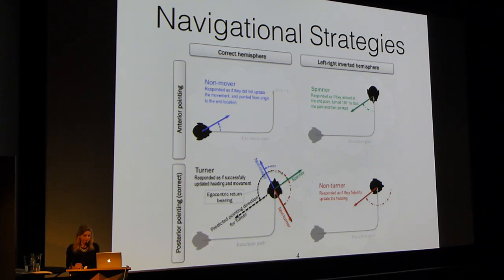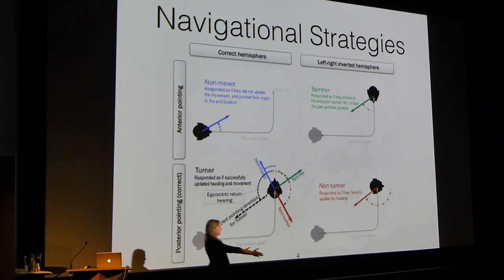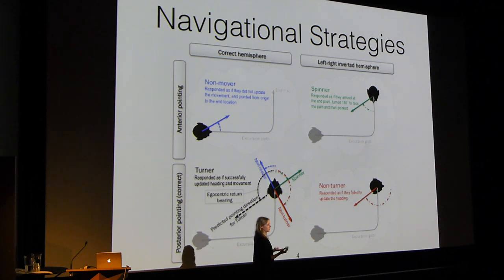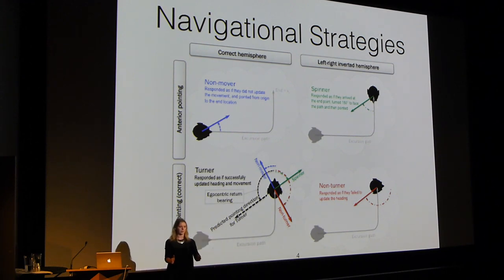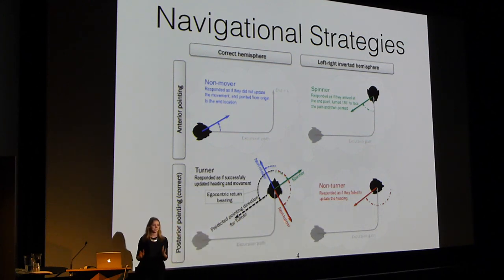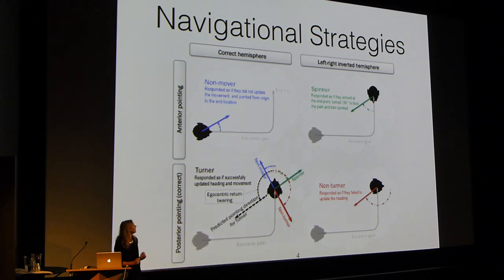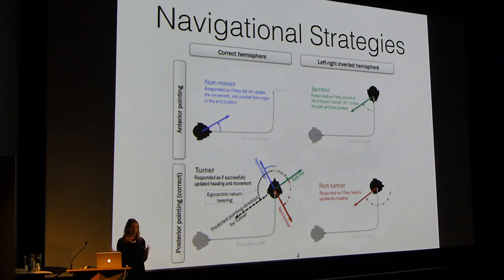I can give a little demo of what this looks like. So if I'm starting here and I walk forwards and then turn and stop — and I ask where is the origin — a turner would point to the left. Whereas a non-turner would go forward and point that way. A spinner goes to the end and then spins around to say that's the starting point. And then the non-mover is as if they watched the path and then pointed — it's like they don't really understand what was happening.